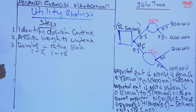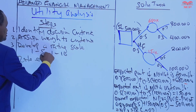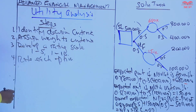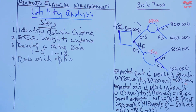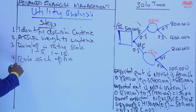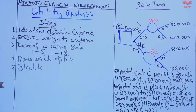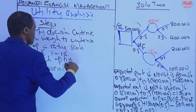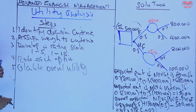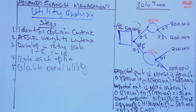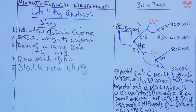Then after that you rate each option. Each option is evaluated on each criterion using the rating scale. Finally, you calculate the overall utility. The overall utility is calculated by multiplying each option's rating on each criterion by the corresponding criterion weight, and then you sum the products to obtain the overall utility score for each option.